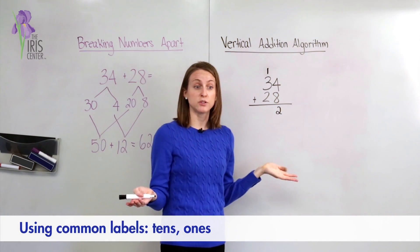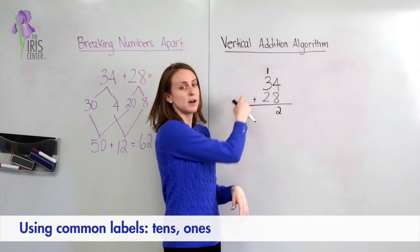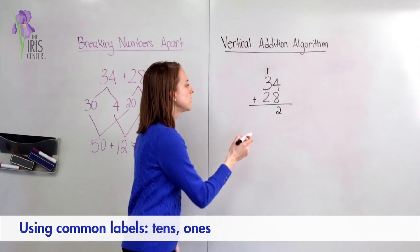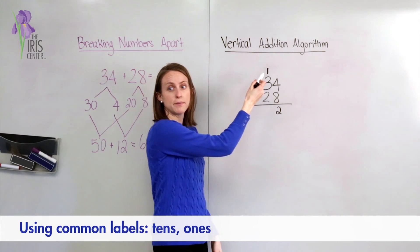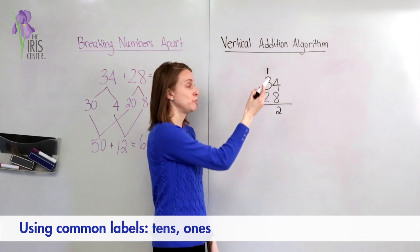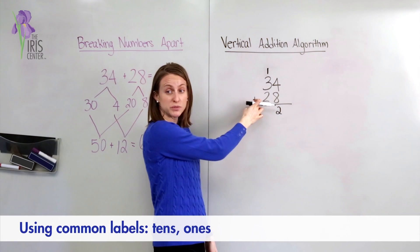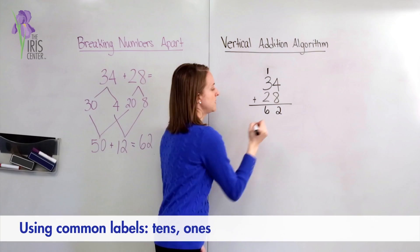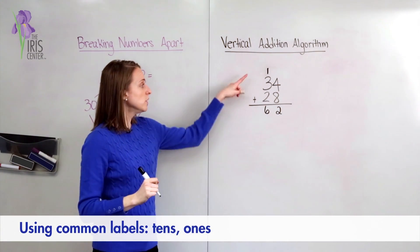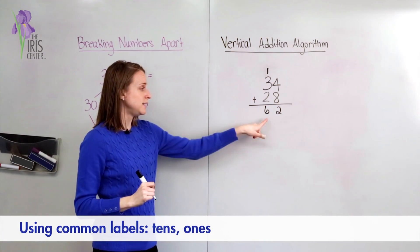So I'm going to write a one above my tens column. And now that we've regrouped and finished the ones column, I can then move on to add in the tens column. And here I have the numbers 3 plus 2, but I can't forget about that one extra group of 10 that I regrouped. So 3 plus 2 equals 5, and if we have one more, that equals 6. So here we solved 34 plus 28 equals 62.